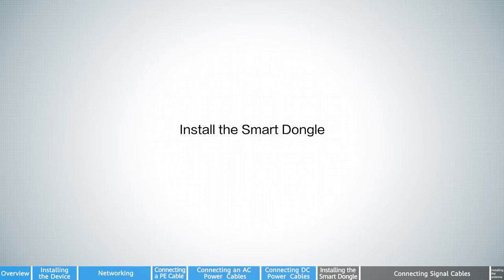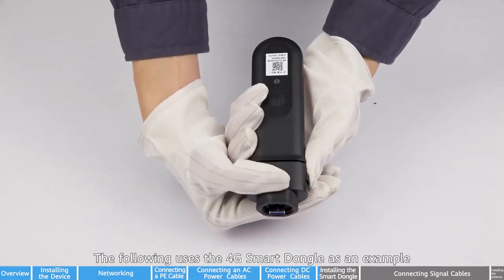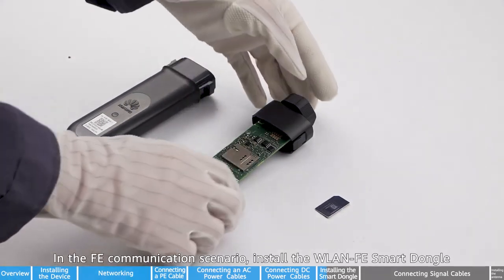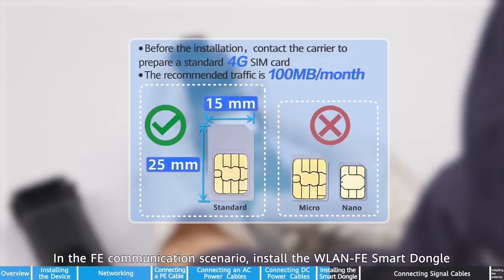Install the smart dongle. The following uses the 4G smart dongle as an example. In the FE communication scenario, install the WLAN FE smart dongle.